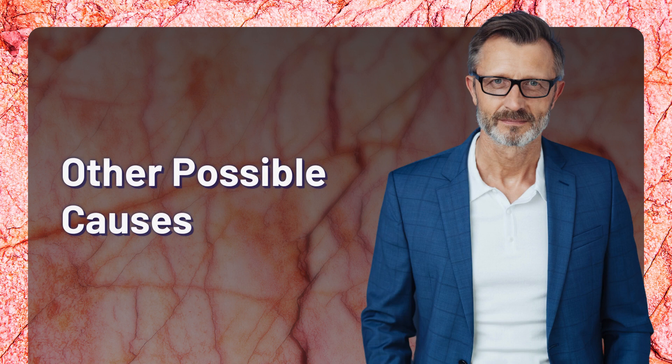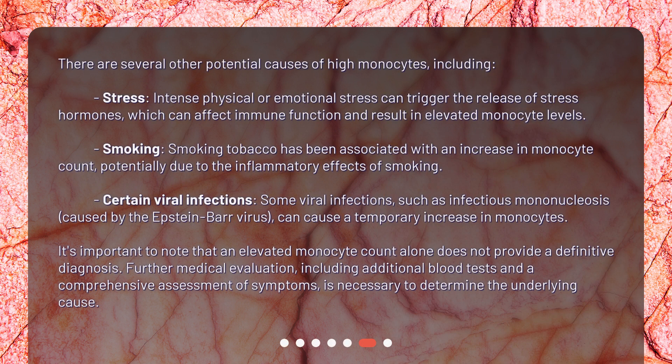Other Possible Causes: There are several other potential causes of high monocytes, including stress. Intense physical or emotional stress can trigger the release of stress hormones, which can affect immune function and result in elevated monocyte levels. Smoking tobacco has been associated with an increase in monocyte count, potentially due to the inflammatory effects of smoking. Certain viral infections, such as infectious mononucleosis caused by the Epstein-Barr virus, can cause a temporary increase in monocytes. It's important to note that an elevated monocyte count alone does not provide a definitive diagnosis. Further medical evaluation, including additional blood tests and a comprehensive assessment of symptoms, is necessary to determine the underlying cause.